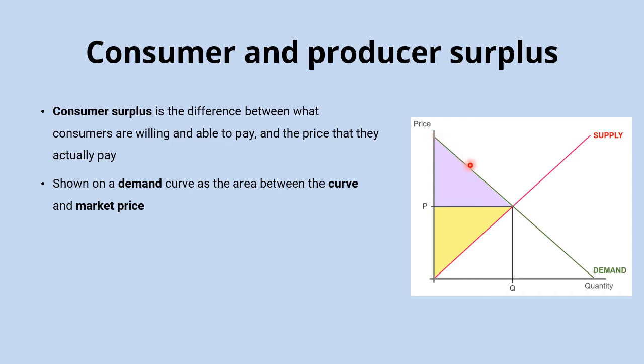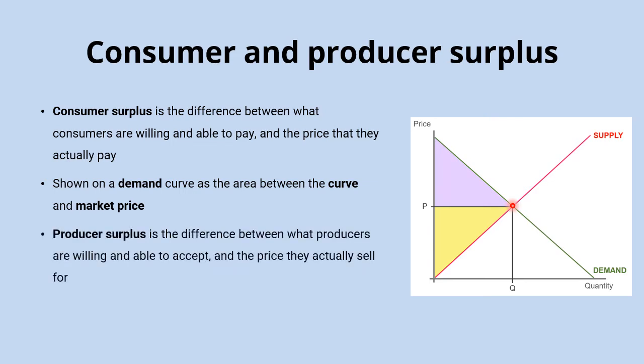We show consumer surplus on the diagram as this triangle made up of the demand curve and the price line. The producer surplus, on the other hand, is the difference between what producers are willing and able to accept and the price that they actually sell for.